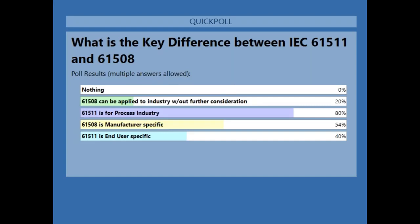Good that people knew there was a difference. The 80% response identifying process industry specificity is correct — the correct answers are the final three options. Most importantly for process industry — oil and gas, mining — you need 61511. For the 20% who said 61508 can be applied without further consideration, that is putting the end user at risk, because 61508 is just a vague, generic standard. IEC 61511 is process industry in language and context, and is performance-based rather than prescriptive.